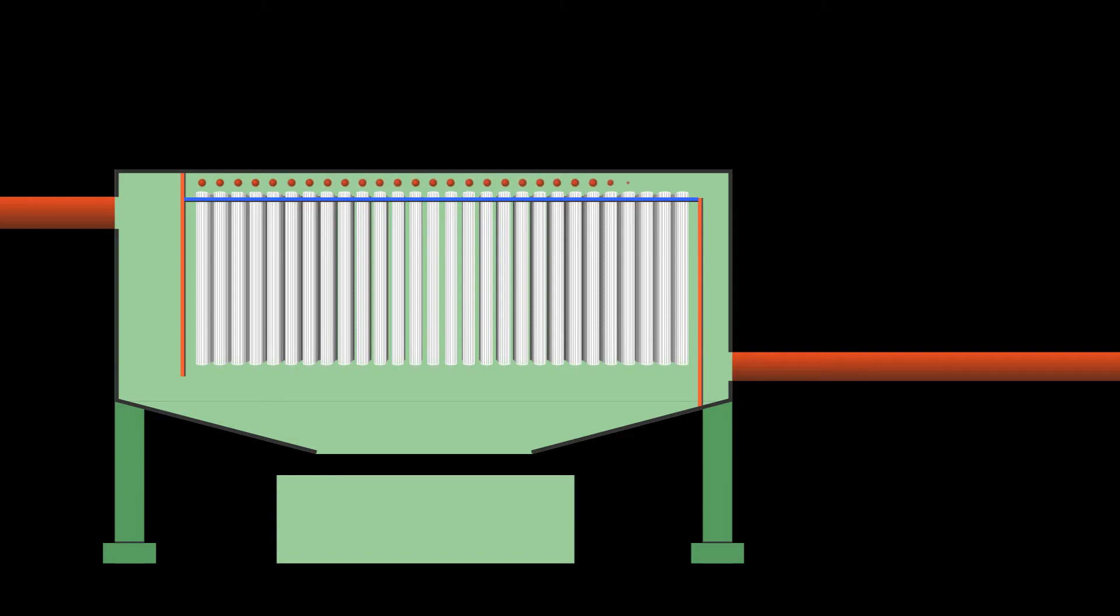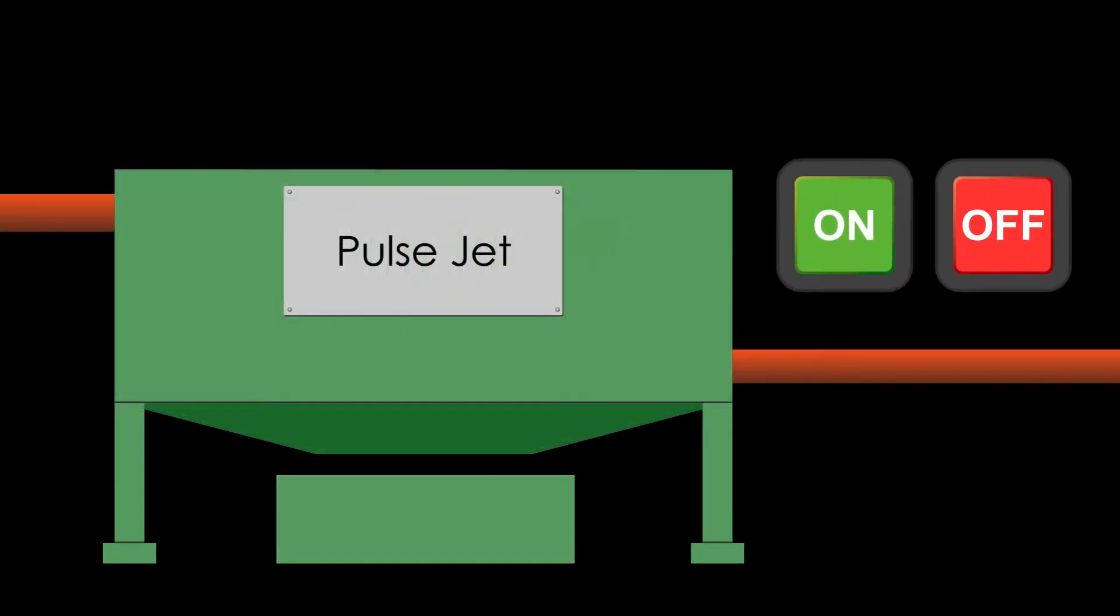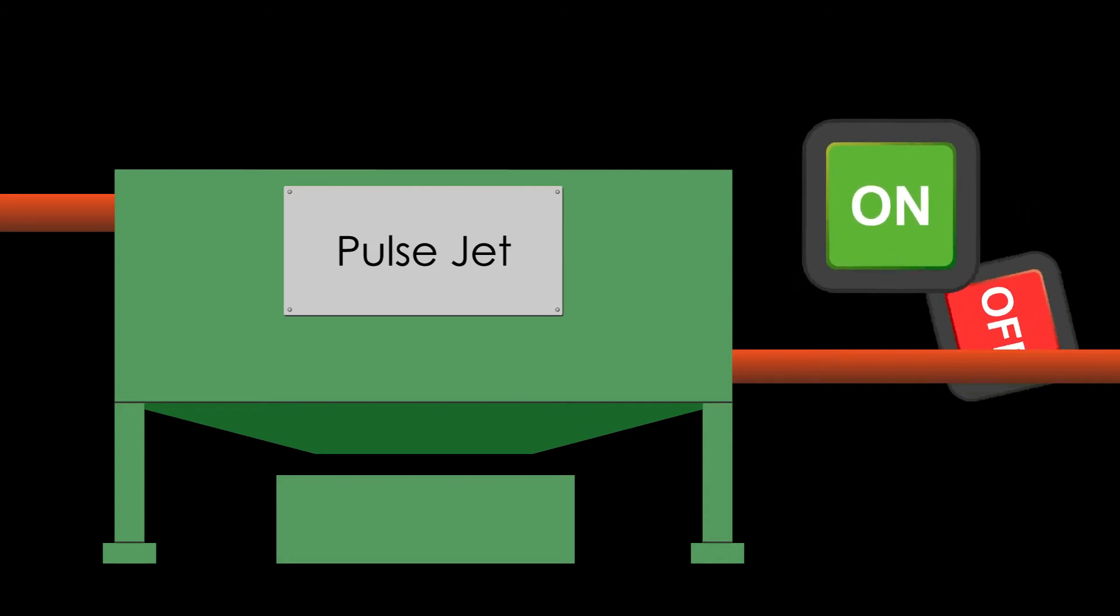When activated, the reverse pulse air travels down the length of each bag in the given row, causing a ripple effect dislodging and releasing the cake dust into the hopper at the base. A main advantage of the PulseJet baghouse is that it does not have to be taken offline to clean the filters.